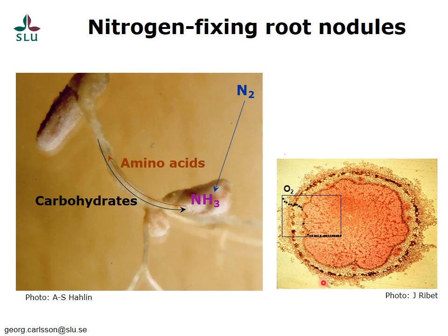This photo is a microscope image of a cross section of an active root nodule, and it shows several things. It shows that the outer layer of the nodule has a dense cell layer, which creates a type of diffusion barrier. This is illustrated by a graph showing the measured concentration of oxygen, which is much higher outside the nodule than inside. The oxygen concentration inside is much lower, partly because of this diffusion barrier created by the dense cell layer, and partly because of the red color visible inside the nodule.